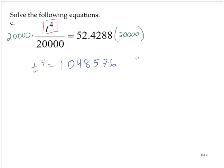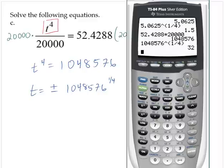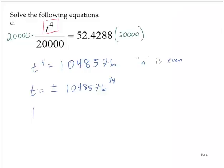Now again, notice that n is even. So t would equal plus or minus 1,048,576 to the 1 fourth power. Let's calculate that. Raise. Open quantity, 1 divided by 4, close quantity, 32. So t is equal to positive or negative 32.